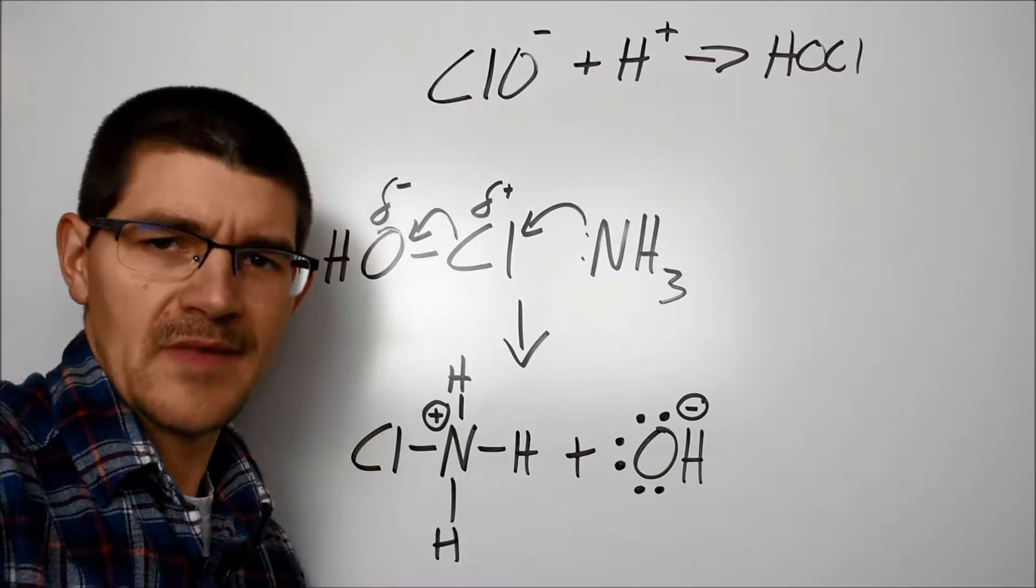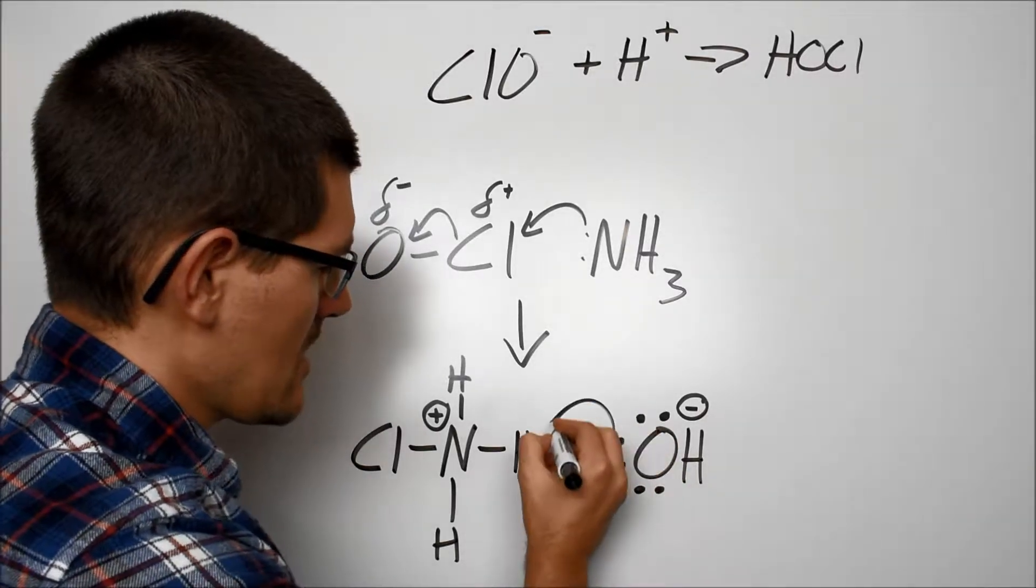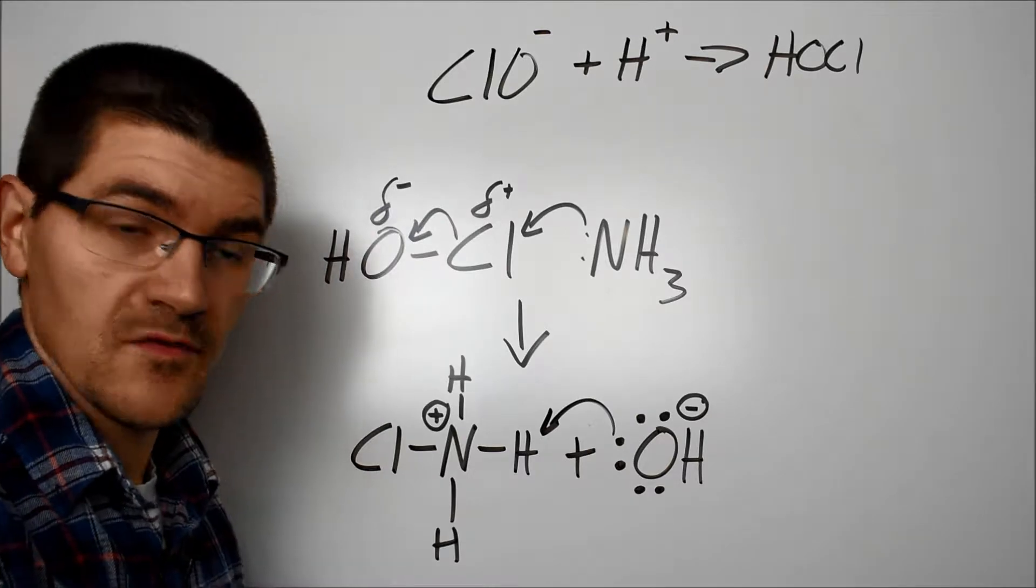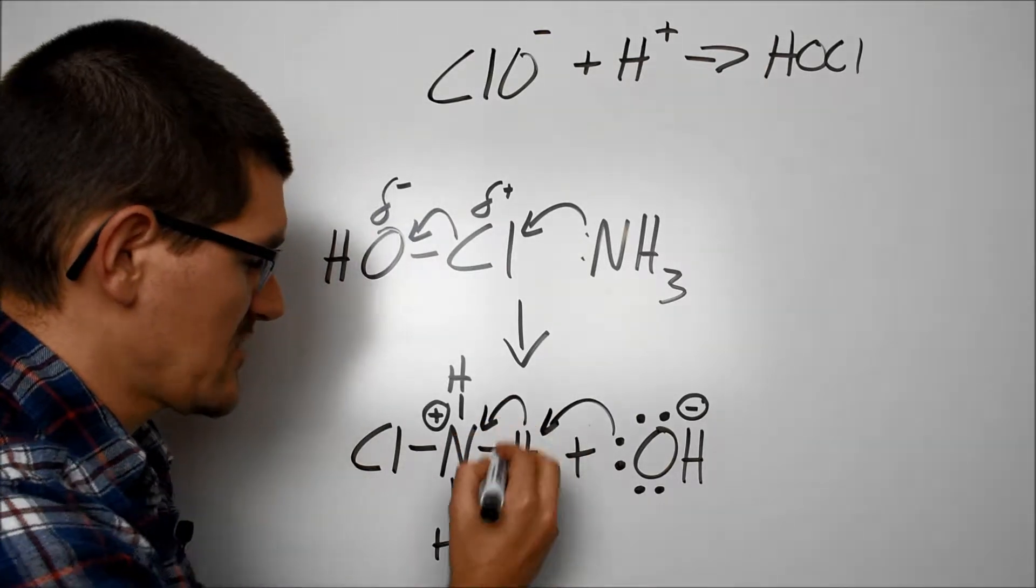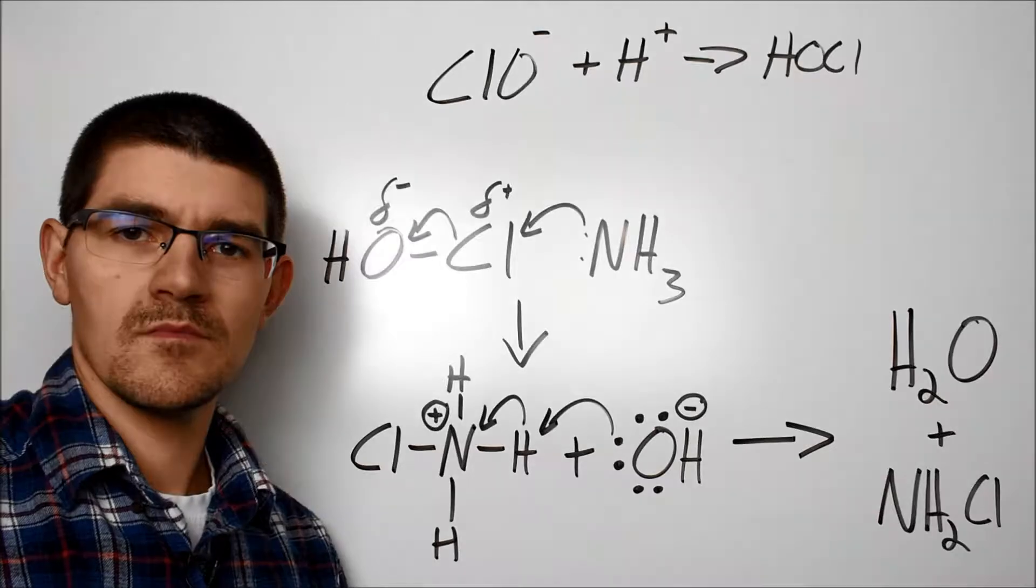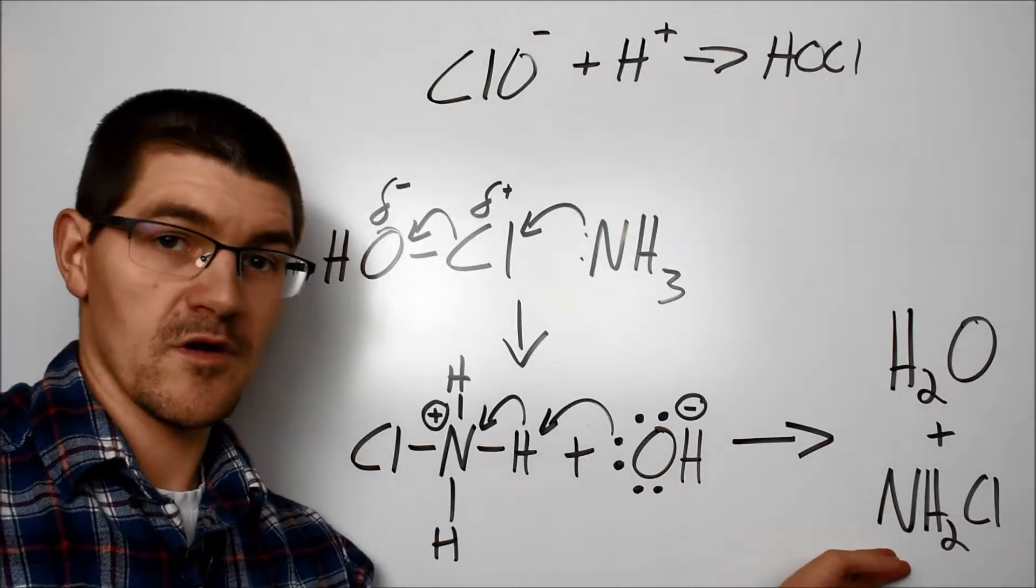Gosh, wouldn't it be nice to balance those charges? Well, turns out it's very easy to do. The oxygen comes over and grabs one of the hydrogens from the nitrogen. Hydrogen donates the electrons back to the nitrogen, and we are left with water and monochloramine.